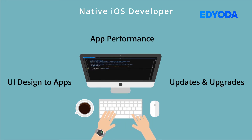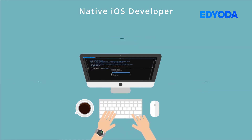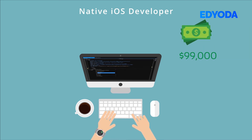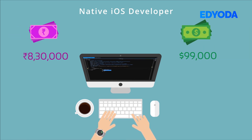The only difference is that you will be working on iOS applications. The average salary for an iOS developer is around $99,000 in the United States and around ₹8,30,000 in India.